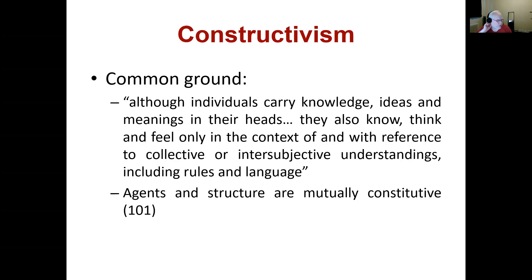Another example often used to explain mutual constitution is slavery. Can you have the structure of slavery without slave owners and slaves? Can you have the agents of slaves and slave owners without the structure of slavery? Not really. It's not that a structure of slavery caused there to be slaves and slave owners, nor that slaves and slave owners caused slavery. It was a structure that defined the identities of different actors within it. You can't have the structure without those agents and you can't have the agents without that structure — they define each other. Based on your position within this structure, you have particular roles, identities, and these identities produce your interests.